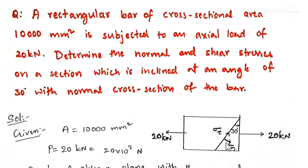So here is a rectangular bar which is subjected to an axial load of 20 kN and the area is given as 10,000 mm square. We are supposed to find out normal and shear stresses on the oblique section which is making an angle of 30 degrees with the normal cross section. On this plane we have to find out the normal stress and shear stress.